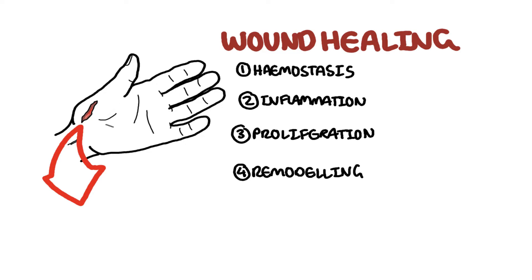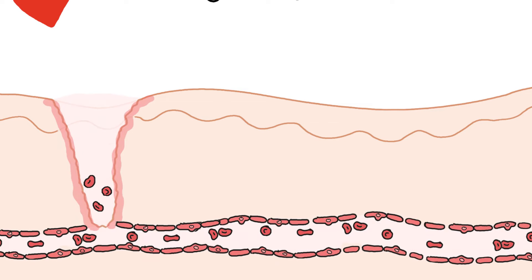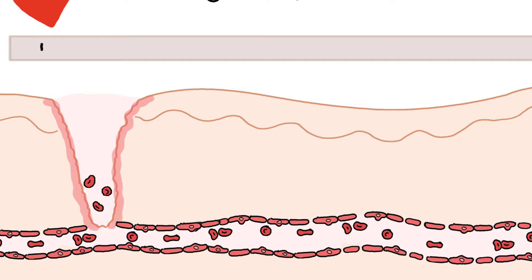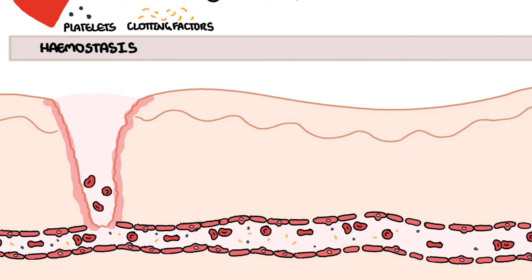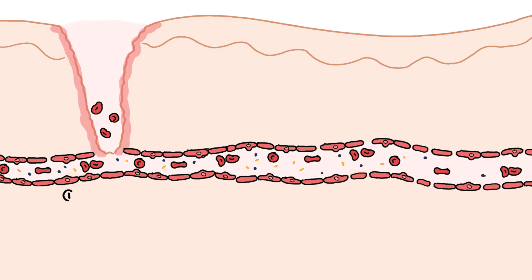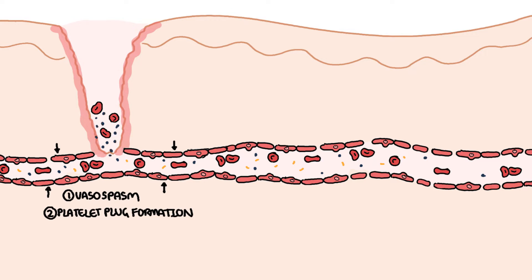The first phase of wound healing is hemostasis. Immediately after injury, disruption of blood vessels leads to hemostasis. The key players in this stage are platelets and clotting factors, which normally circulate in the blood. Hemostasis involves vasospasm, vessel constriction, platelet plug formation, and activation of the coagulation system.